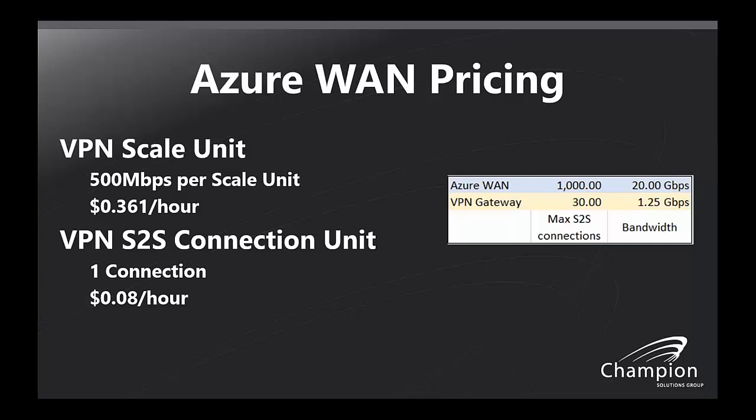Another nice benefit is the site-to-site piece. This may be a way to save money on that expensive MPLS circuit — pay Microsoft to do it instead. You're looking at data centers with sub-millisecond latency from point to point, which is a huge selling point. One of the big differences between a traditional VPN gateway with site-to-site connections is that you were limited to 30 site-to-site connections, whereas with the Azure WAN you can have up to 1,000 site-to-site connections — a huge difference.